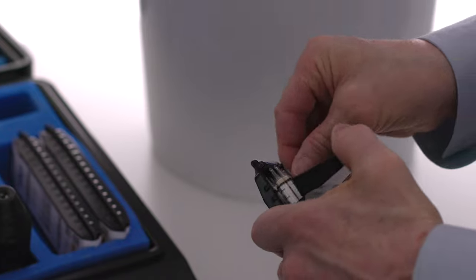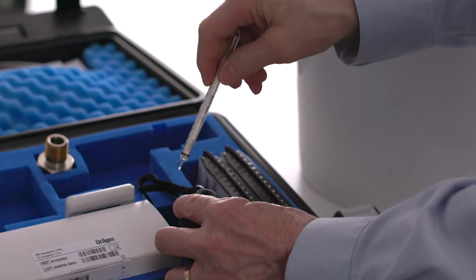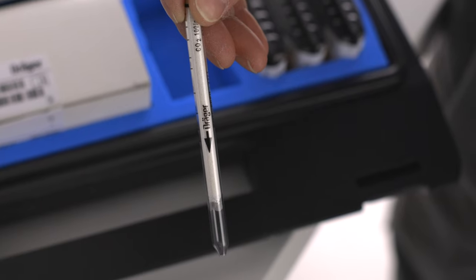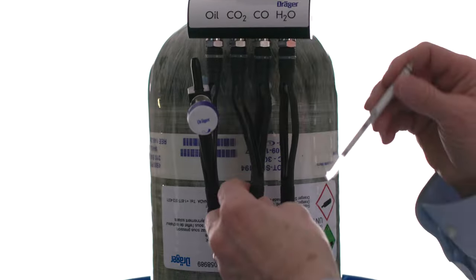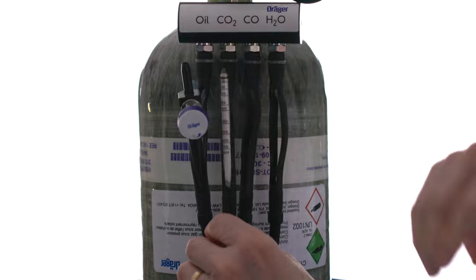Select one of the carbon dioxide tubes from the case. Score and snap off the tips using the tube opener. The arrow on the tube indicates the direction of airflow. Insert the tube into the bottom of the correct holder, leaving the top part disconnected for now.